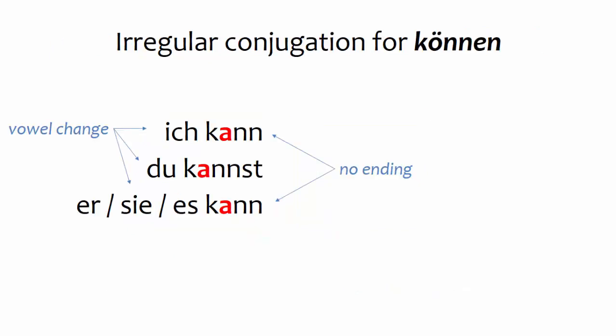For example, look at the conjugation of können. The singular forms have a vowel change compared to the infinitive, and the ich and er/sie/es forms have no ending. The plural forms, in contrast, are completely predictable and regular.